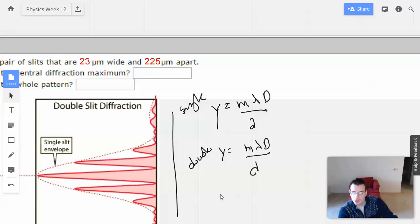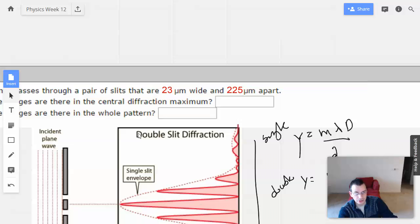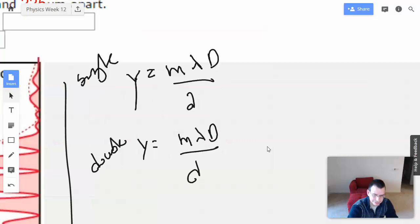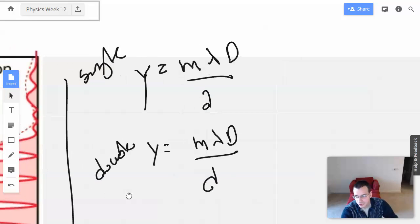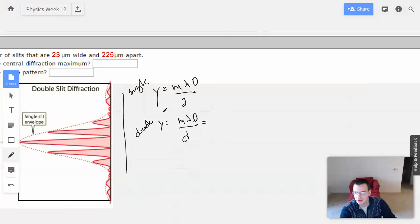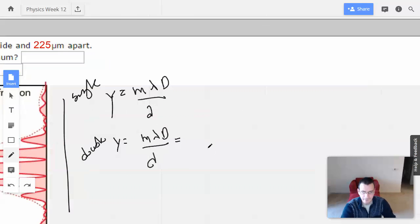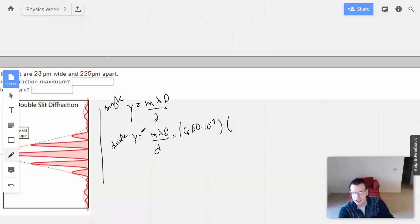So what we're going to do then is we're going to find out we're going to compare the two. So for the double slit, which will be the small ones, we're going to find out how y each of those is. So the distance to the first maximum will be lambda, which is 650, times 10 to the negative 9th. Were we given the distance? We weren't given the distance. So what we're going to do then is divide both sides by d, kind of get rid of this guy.